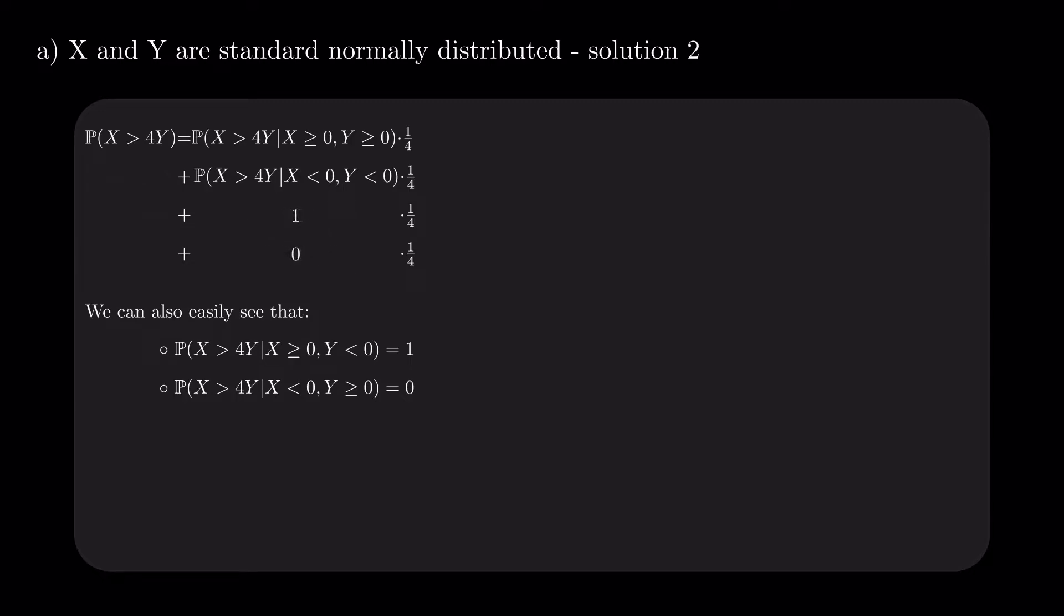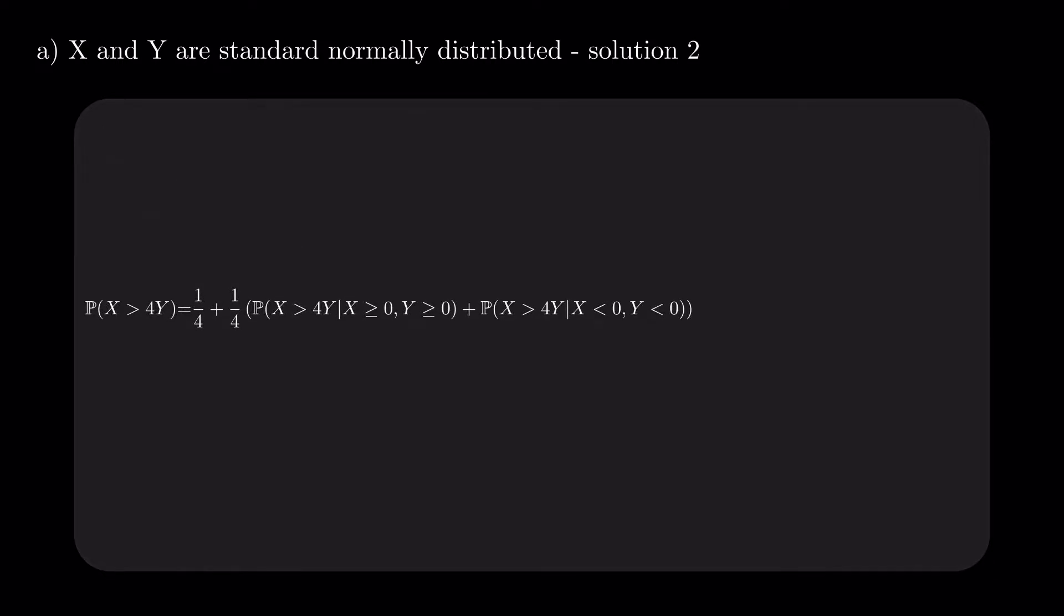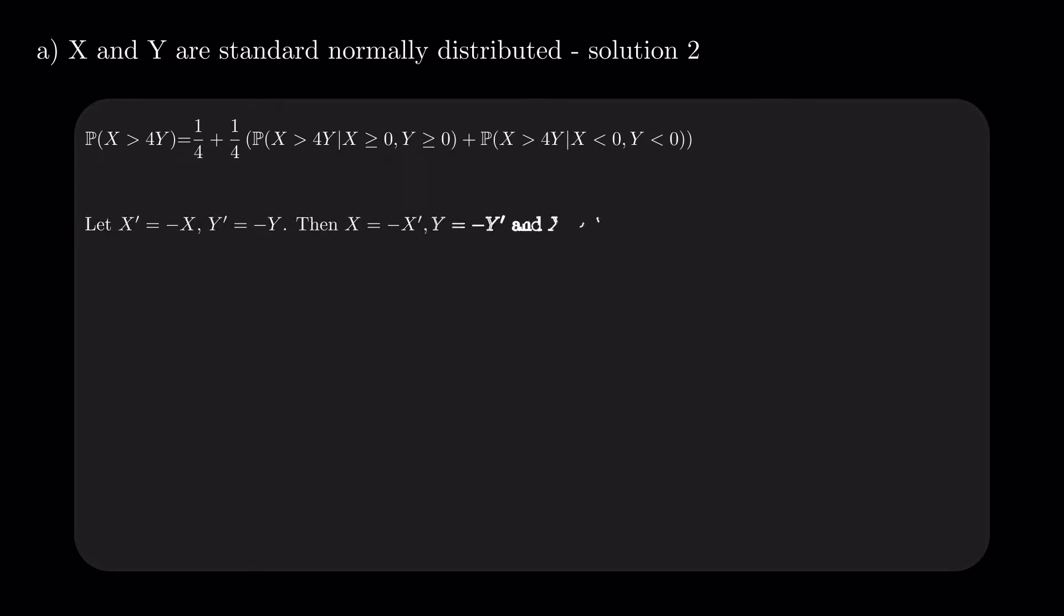Replacing all the values derived before, we get a new formula for the probability we are seeking. The two probabilities involved on the right-hand side of the equation look very similar, conditioned on opposite quadrants. We can denote X' and Y' as the opposites of X and Y and know that they both have the same distribution and are independent exactly like their counterparts.